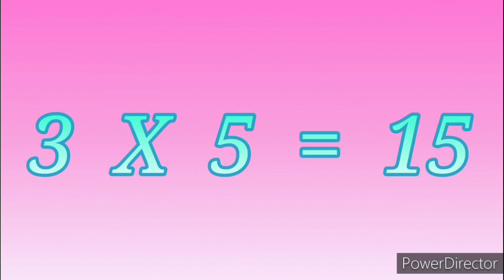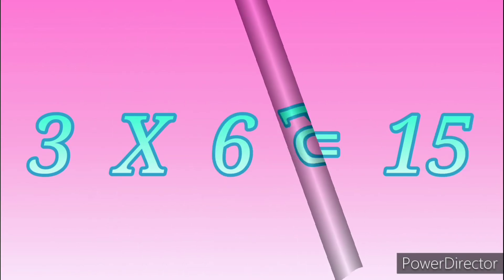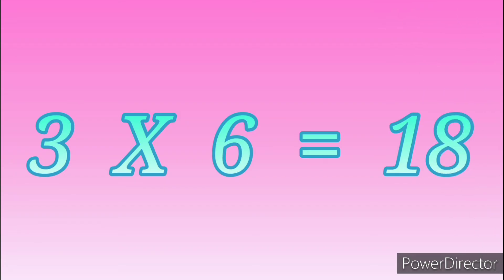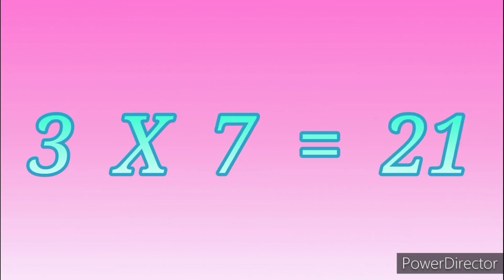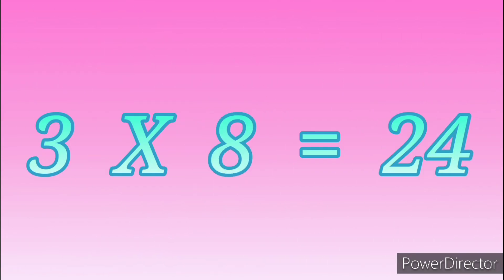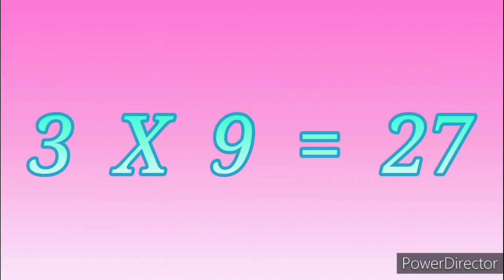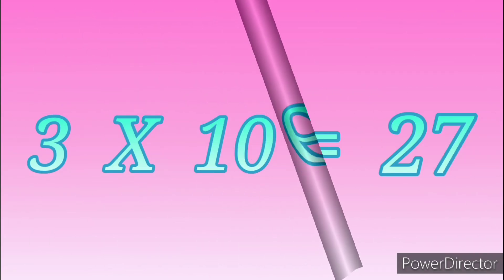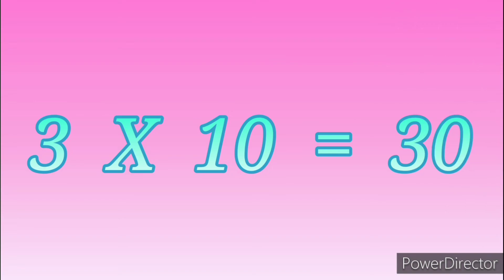3 fours are 12. 3 fives are 15. 3 sixes are 18. 3 sevens are 21. 3 eights are 24. 3 nines are 27. 3 tens are 30.